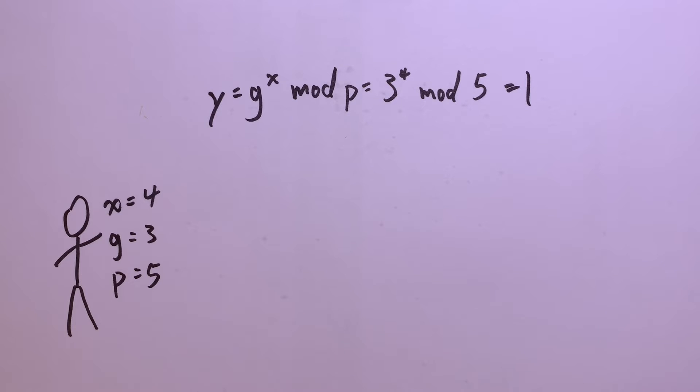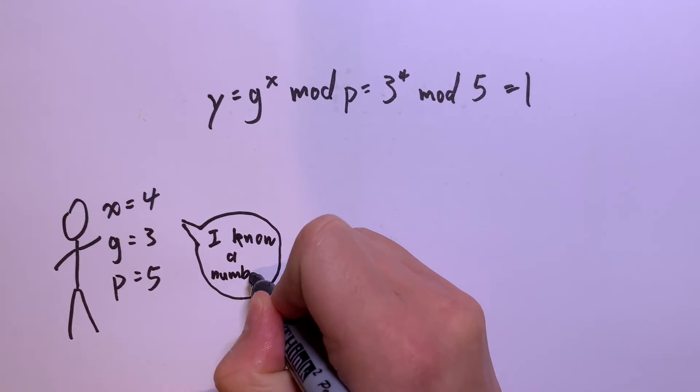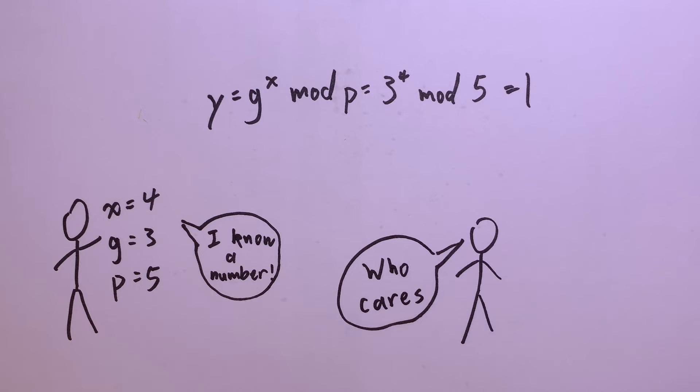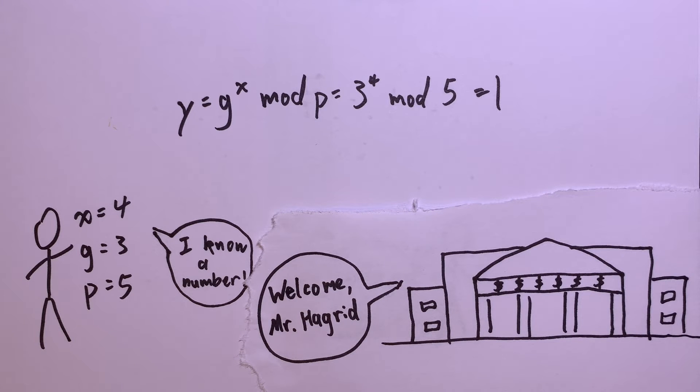Okay, so this is all cool, but why do we care about proving we know x? Well, x could be your password. Then if you prove you know x without revealing it, you can log into your bank without sending them your password. So how do you prove you know x without sending it to the verifier?